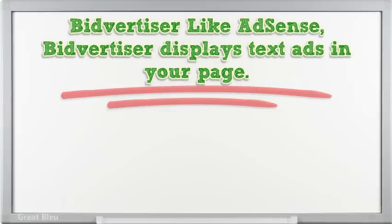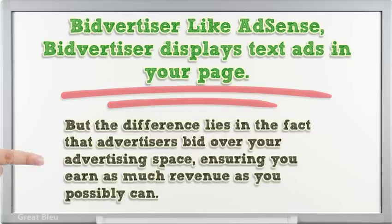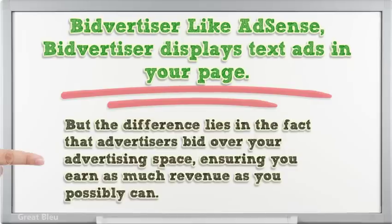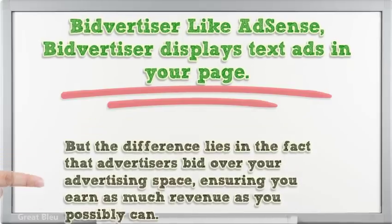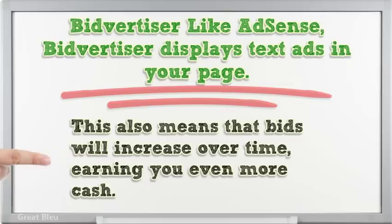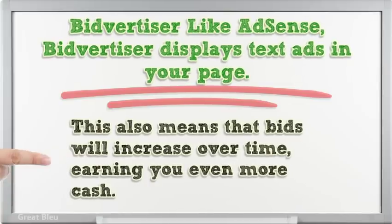Advertiser-like AdSense — advertisers display text ads in your page, but the difference lies in the fact that advertisers bid over your advertising space, ensuring you earn as much revenue as you possibly can. This also means that bids will increase over time, earning you even more cash.